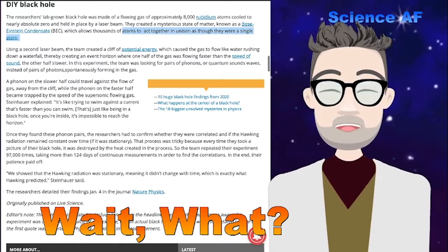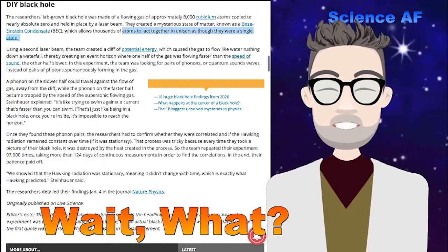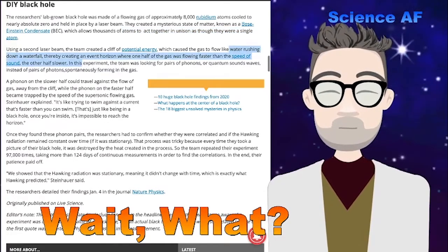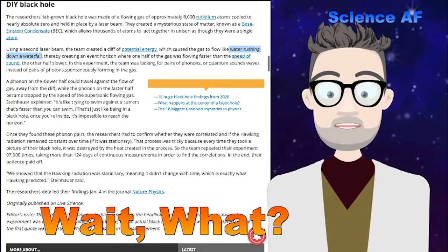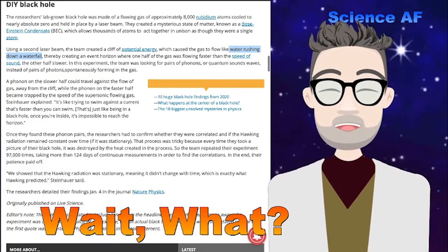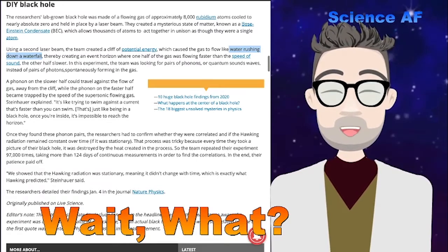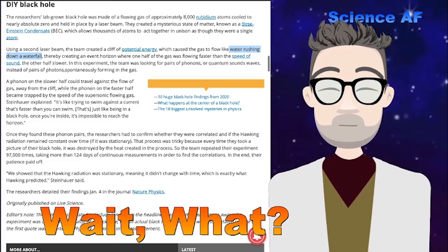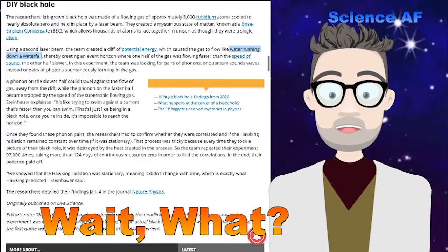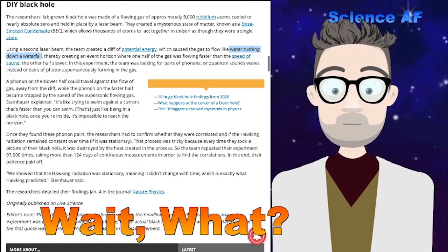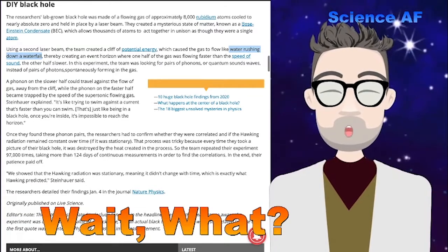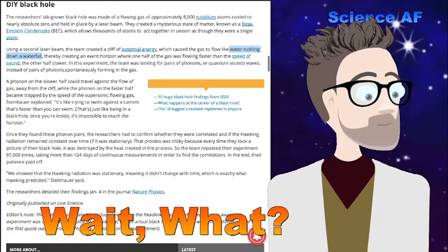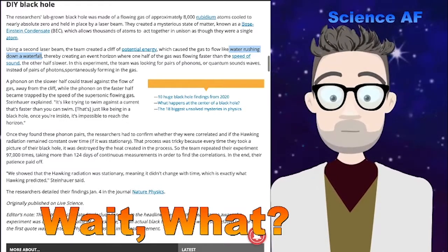It's not a black hole. But what they did, they added a second laser beam, creating a cliff of potential energy. The second laser beam added energy such that the gas began to flow. It says here, flow like a rushing waterfall. But that gives the wrong connotation, like it was falling off. Imagine, as a ball of rubidium, this giant rubidium atom.